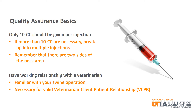Regardless of route of administration, only 10 cc's should be given per injection site. If more than 10 cc's are indicated, it should be split across multiple injections. Remember, the animal has two sides of the neck area. It is important to have a working relationship with a veterinarian who is familiar with your swine operation — this is necessary for a valid veterinary client-patient relationship, or VCPR.